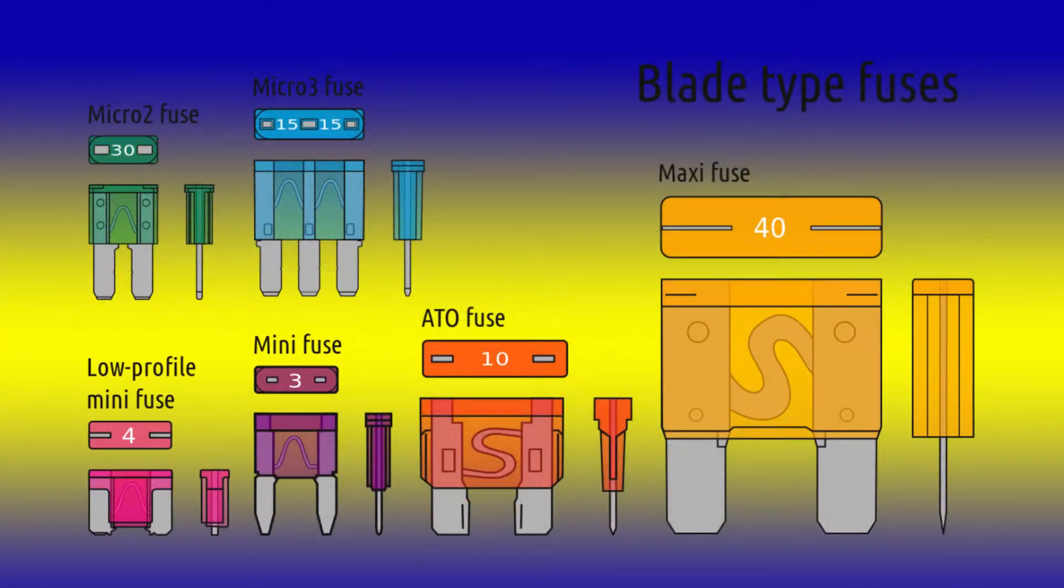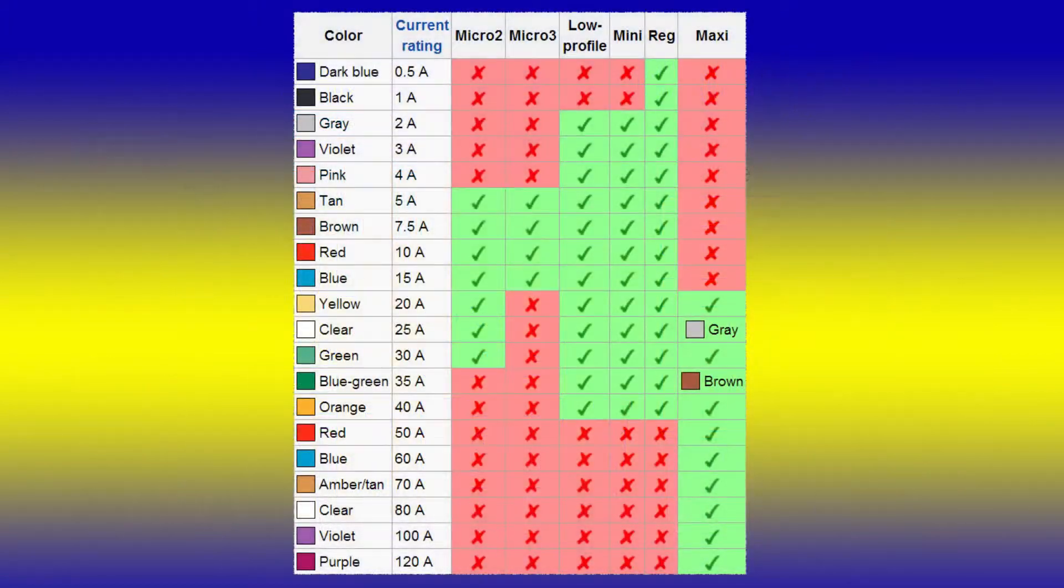There are six basic types of blade fuses: the Maxi Fuse, the ATO Fuse (sometimes called the Regular Fuse), the Mini, the Low Profile Mini, the Micro 3 Fuse, and the Micro 2 Fuse. The three basic fuses are the Maxi, the Regular or ATO, and the Mini.